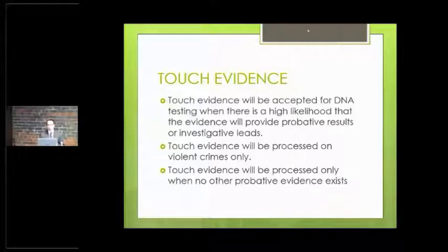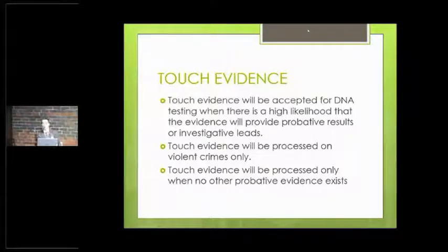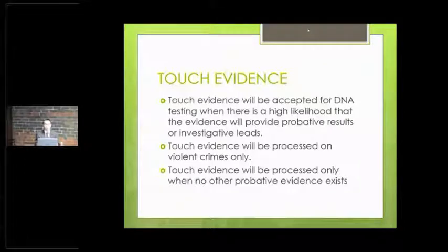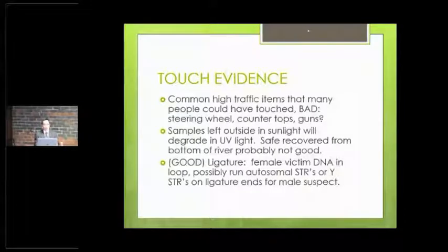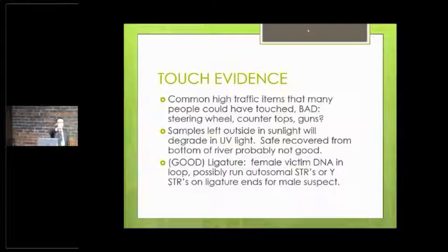My big thing is we want to look at samples that we have a good chance of getting results from. We just don't have the resources in our lab to run every touch DNA sample, so we've really limited the number of samples we'll do on touch cases — violent crimes only. Touch evidence is processed only when no other probative evidence exists. High-traffic areas are bad: countertops, the steering wheel of a stolen car, guns. We always have stolen-in-possession cases and I usually get a four or five person mixture on those guns.